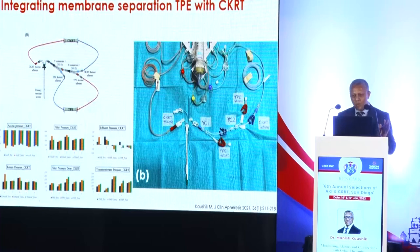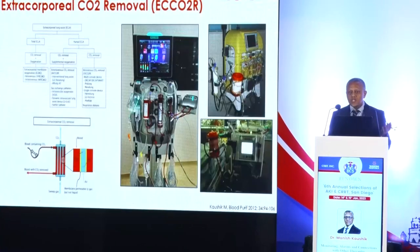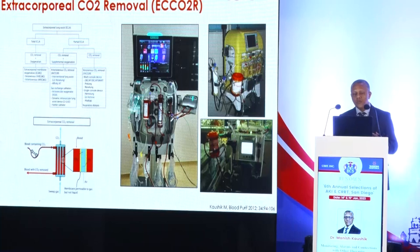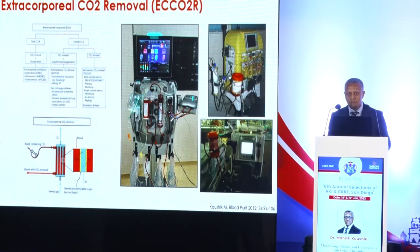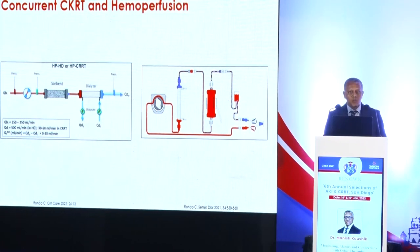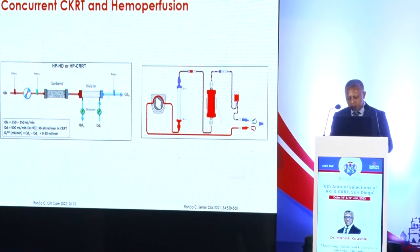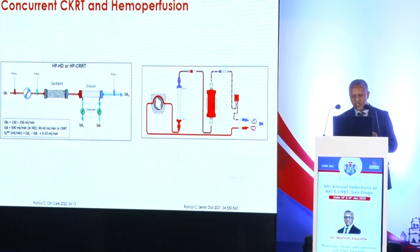Extracorporeal CO2 removal is increasingly used and can be done independently or integrated with the CKRT circuit — many modern platforms allow multiple therapies to run together. Lastly, hemoperfusion columns are used in patients with sepsis, post-cardiac surgery, hyper-inflammatory states, or high cytokine release situations, and these cartridges can be integrated into the CKRT machine. With that, I will stop here — thank you very much.